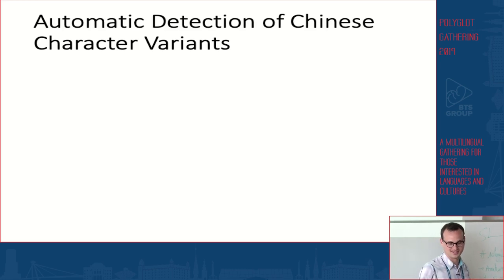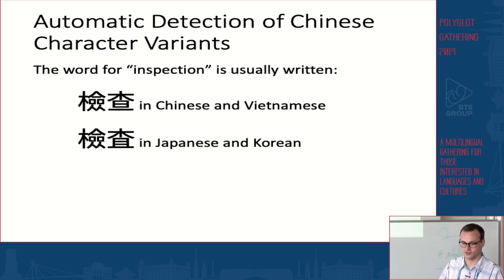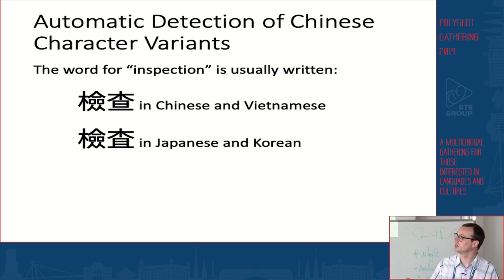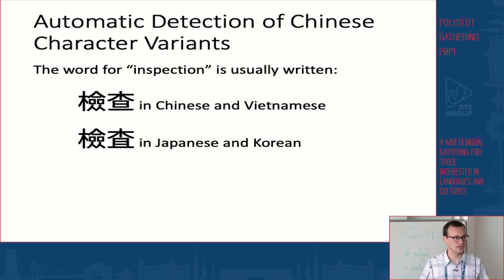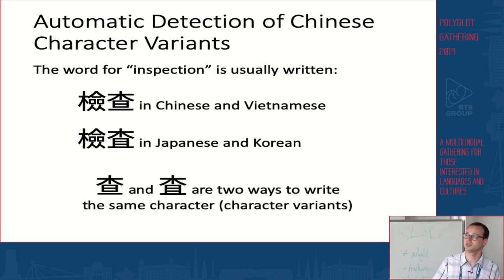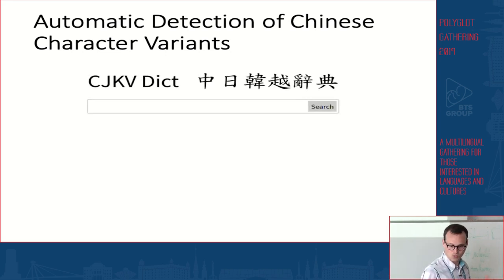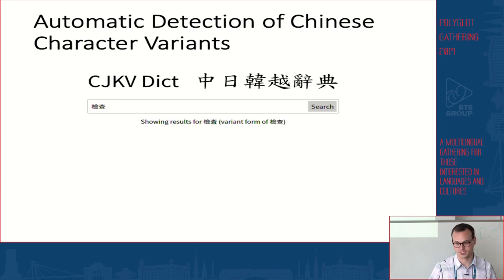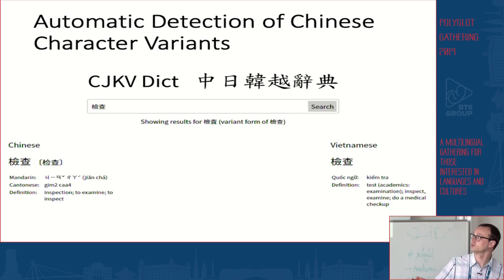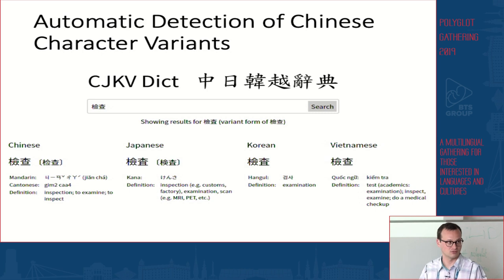Another interesting feature is that CJKVDICT can automatically detect what I call Chinese character variants. For example, the word for 'inspection,' even accounting for simplification reforms, has one form in Chinese and a slightly different form in Japanese — both written differently but meaning the same thing. These are Chinese character variants: two ways to write the same character. If you enter one of these forms, CJKVDICT automatically detects the variance and displays results matching all variant forms — so you get results for Chinese and Vietnamese, as well as the variant form in Japanese and Korean.